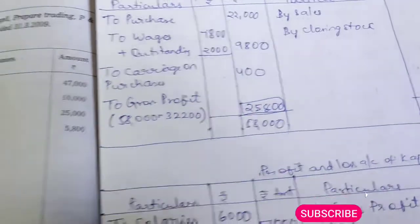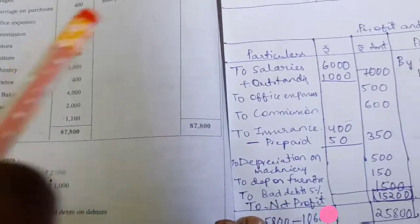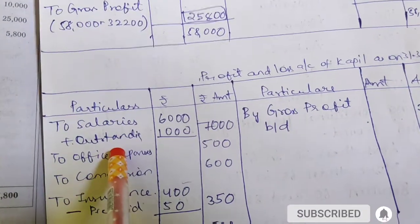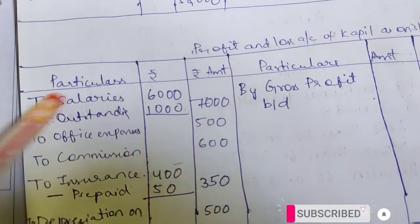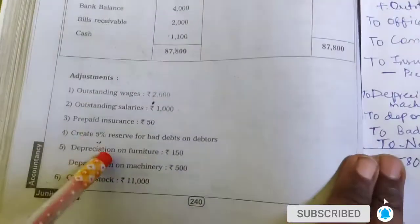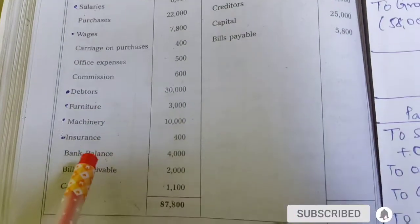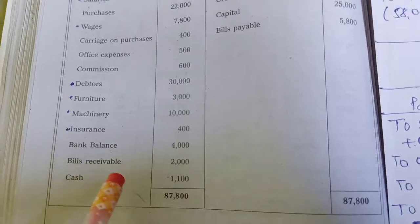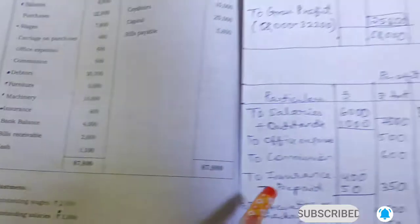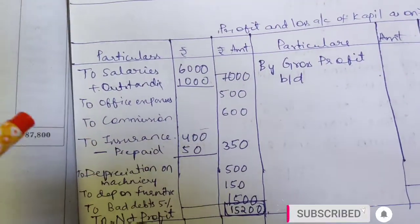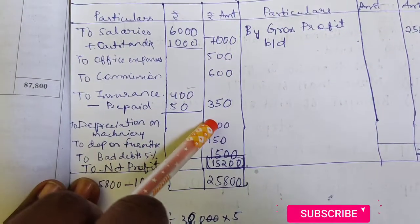Next adjustment: outstanding salary is 1,000. Outstanding is always plus. So salary 6,000 plus outstanding 1,000 = 7,000. Next, prepaid insurance is 50. Insurance amount is 400; prepaid is always deducted — minus. So 400 minus 50 = 350.